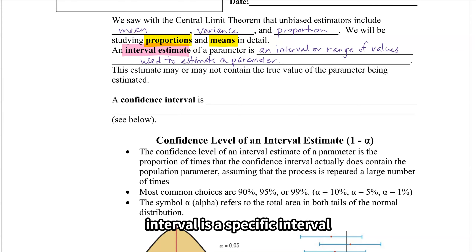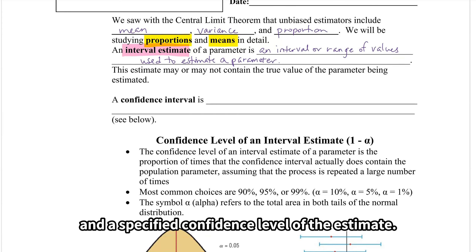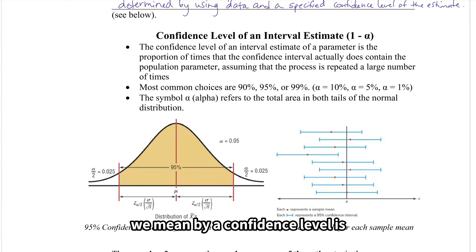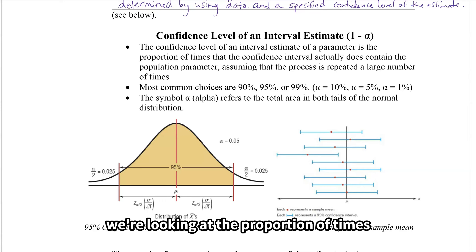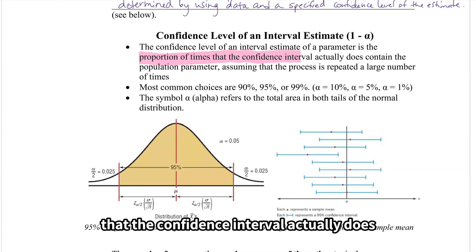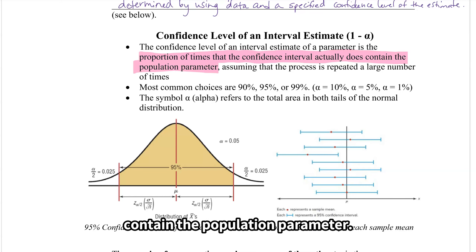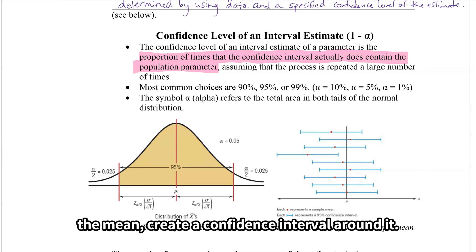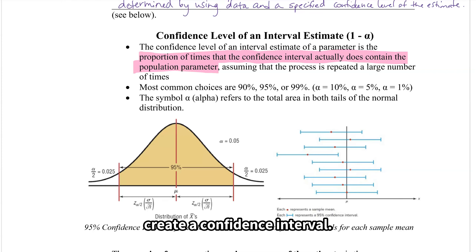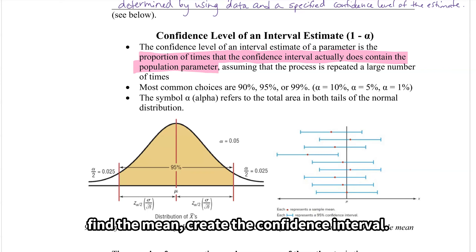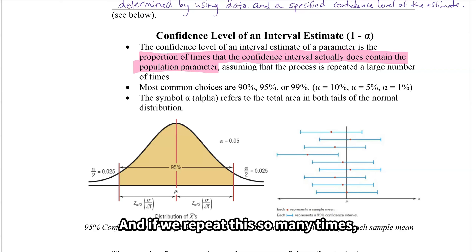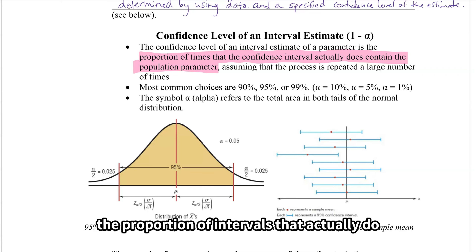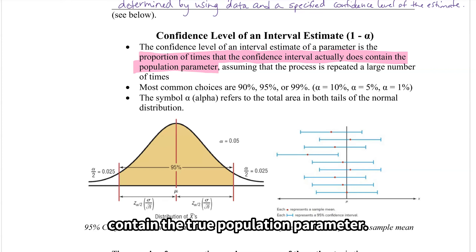A confidence interval is a specific interval estimate of a parameter determined by using data and a specified confidence level. The confidence level is the proportion of times that the confidence interval actually contains the population parameter, assuming we repeat this process many times. So we take a sample, find the mean, create a confidence interval — and repeat. The confidence level tells us the proportion of intervals that actually contain the true population parameter.